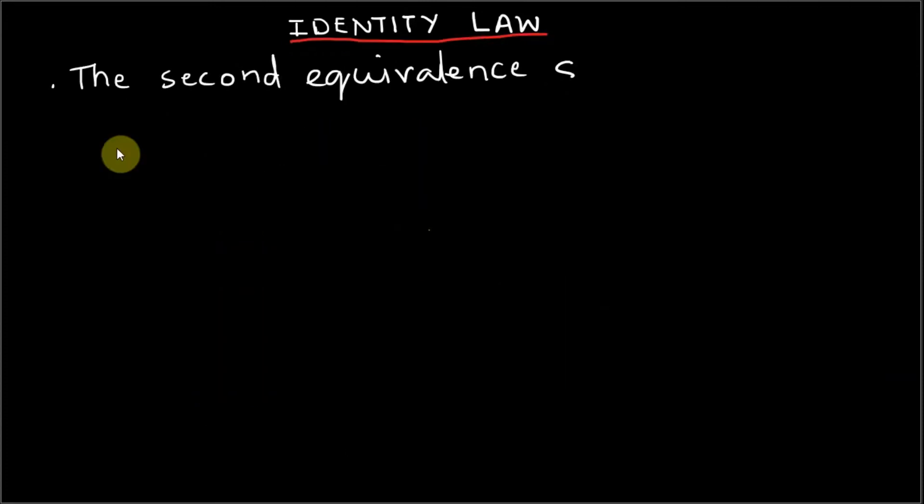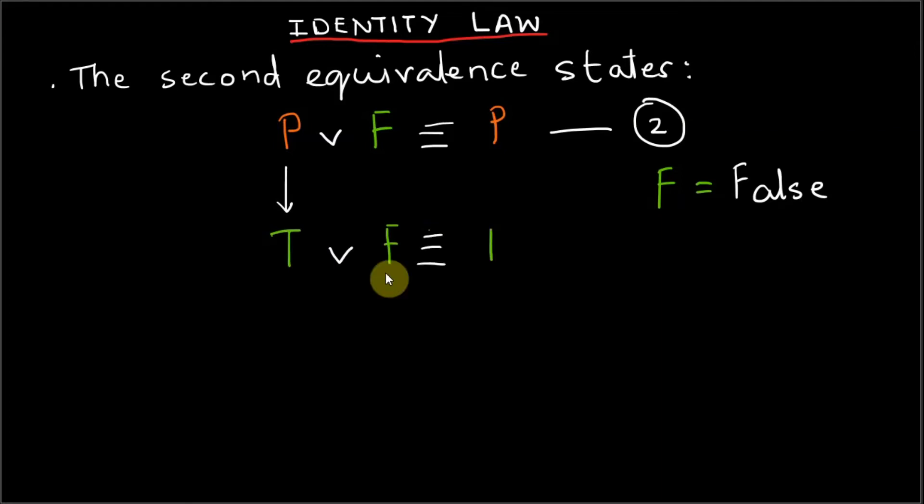The second equivalence states that P or false is P. The F stands for false, meaning we are referring to some statement which is always going to be false, which is why we don't use a variable. If P is true, the output of compound statement P or false is true, as per the working of disjunction, and equivalence holds. If P is false, then compound statement P or false is false and equivalent to P. The equivalence is true again.